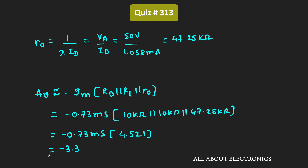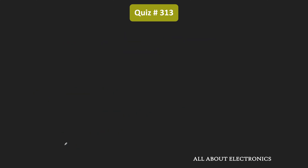So this is the voltage gain of this amplifier. Now, once we know the voltage gain, we can easily find the maximum allowable value of the input signal. When the MOSFET is used as an amplifier it operates in the saturation region, and to stay in saturation VDS must be greater than or equal to VGS minus VT. Here, VDS contains two components: the DC component and the AC component, which is the output voltage.